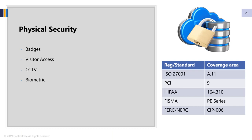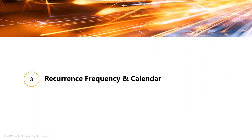Physical security is still important. Obviously, if you're in the cloud, your cloud provider is providing physical security. If you're in an on-premise environment, then you're responsible for physical security. Things like CCTV, badges, visitor access, and biometrics are all very important, as they have always been.